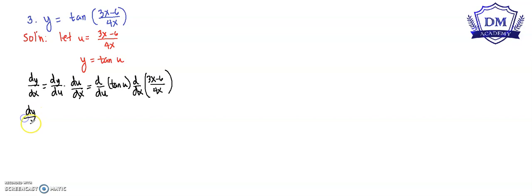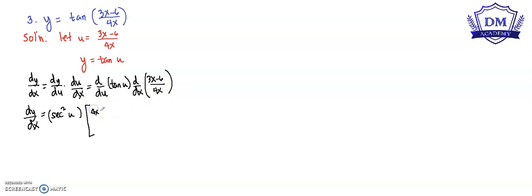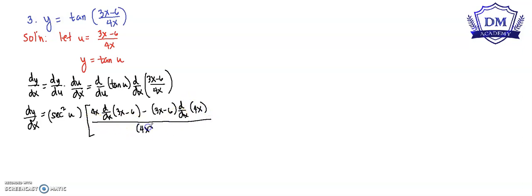The derivative of y with respect to x — what is the derivative of tangent u? That is secant squared u. Multiply it by the derivative of 3x minus 6 all over 4x. Using the quotient rule, we have: 4x times d over dx of 3x minus 6, minus 3x minus 6 times d over dx of 4x, all over 4x squared.